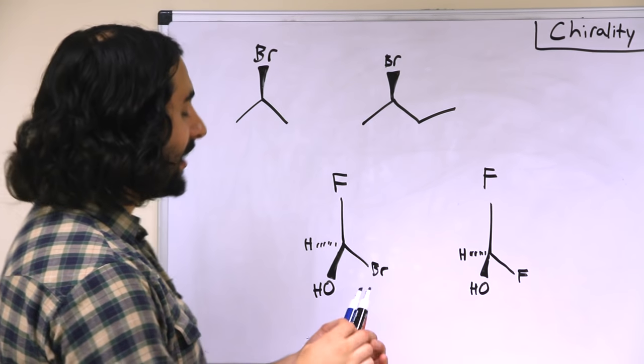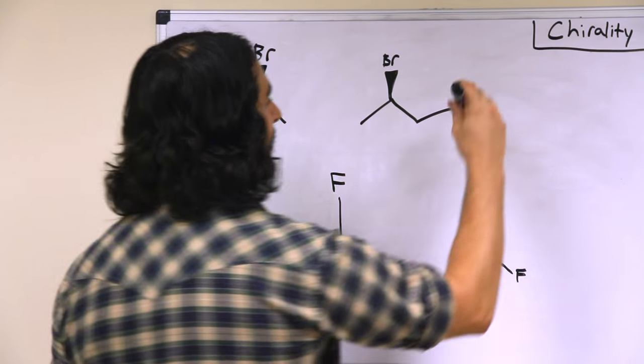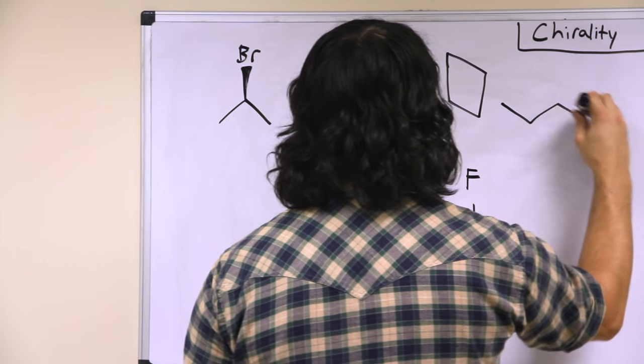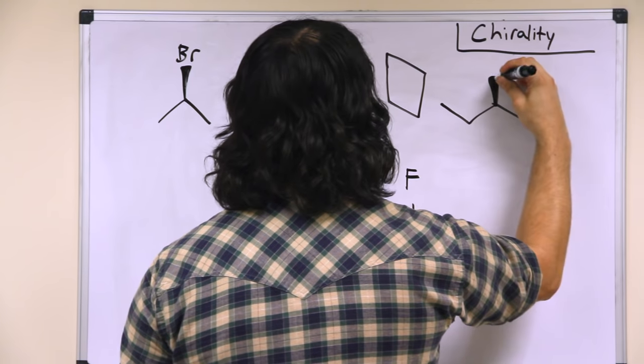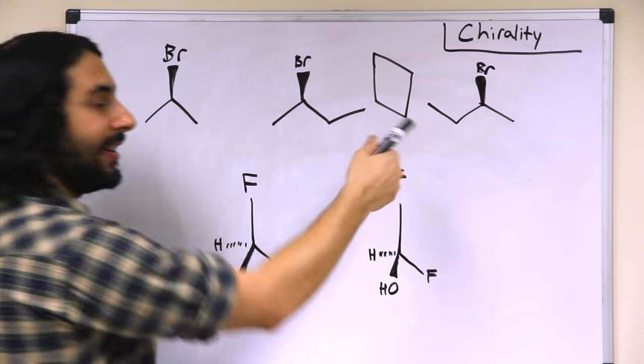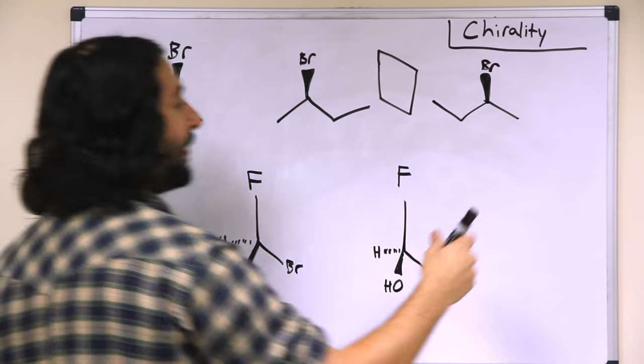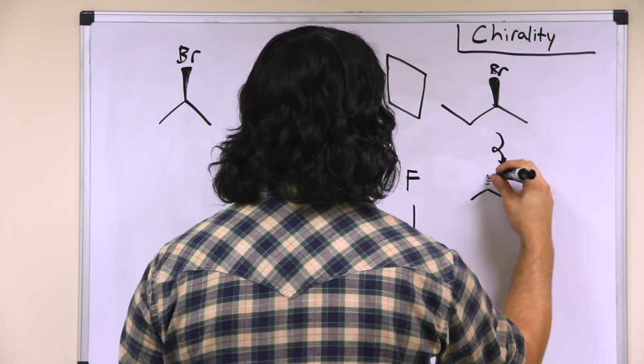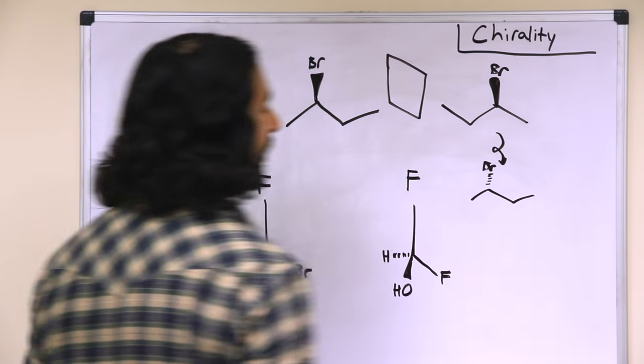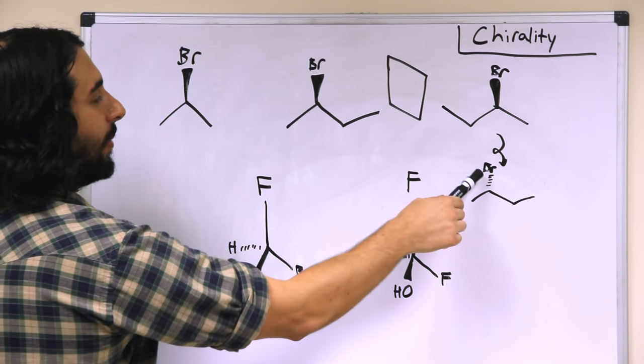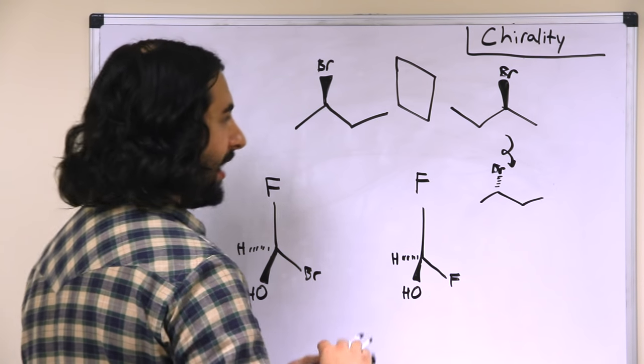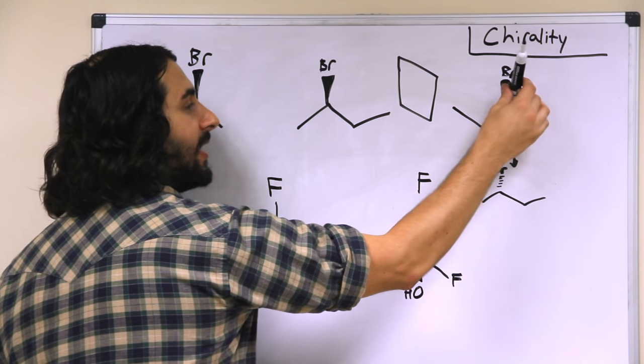So that is four distinctly different groups. And if we went and took the mirror image, we would see that it is that. And now, if we try to flip that around, we would get the same structure, but now the bromine would be on the dash bond.